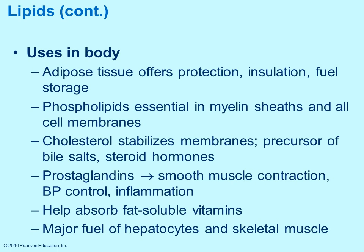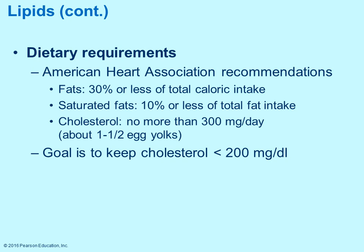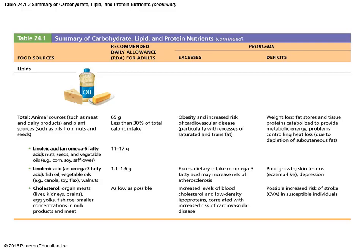Phospholipids are necessary in the production of myelin sheaths around your axons and are also one of the major components of any cell membrane. Cholesterol helps stabilize membranes and is used as a template for production of bile salts and steroid hormones. Lipids help with absorption of fat-soluble vitamins. The American Heart Association recommends fats be 30% or less of total caloric intake, and the goal is to keep cholesterol below 200 milligrams per deciliter.